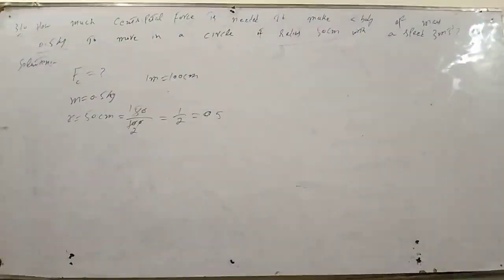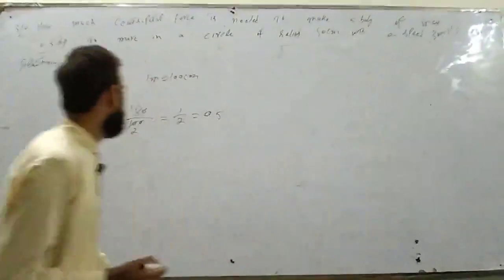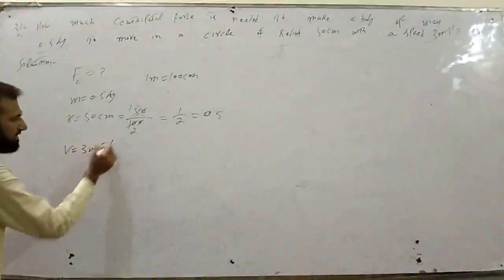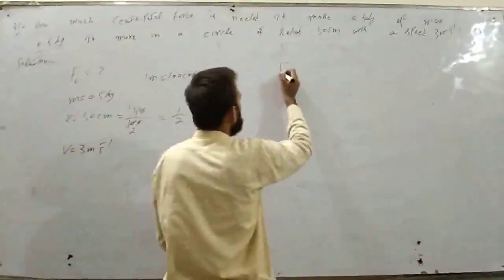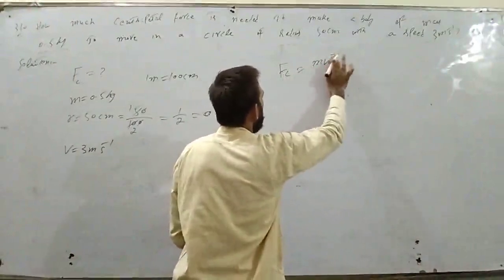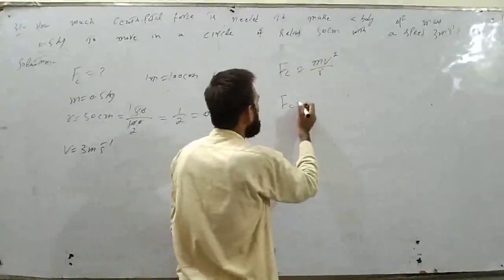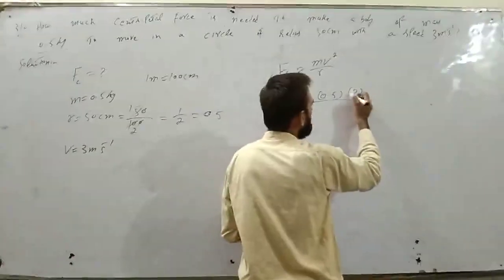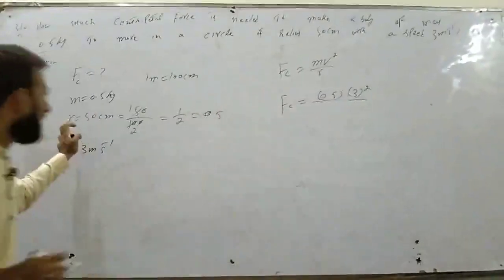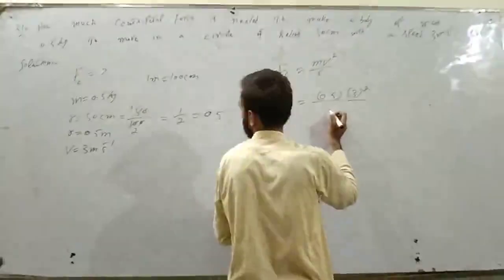Radius भी आ गया, mass भी है, velocity भी दी। As we know that the formula of centripetal force: Fc is equal to mv² over r। Fc = m × v² / r। M = 0.5, v = 3 (v² = 9), r = 0.5। 0.5 से 0.5 cancel हो जाएगा - R की जगा पे 0.5 आ जाएगा।